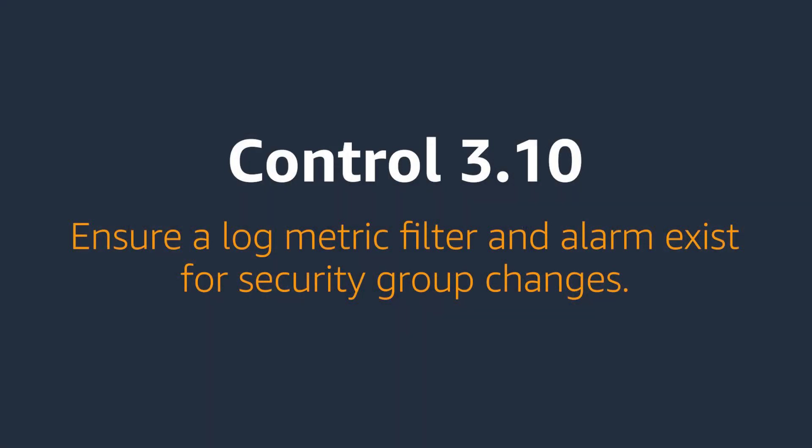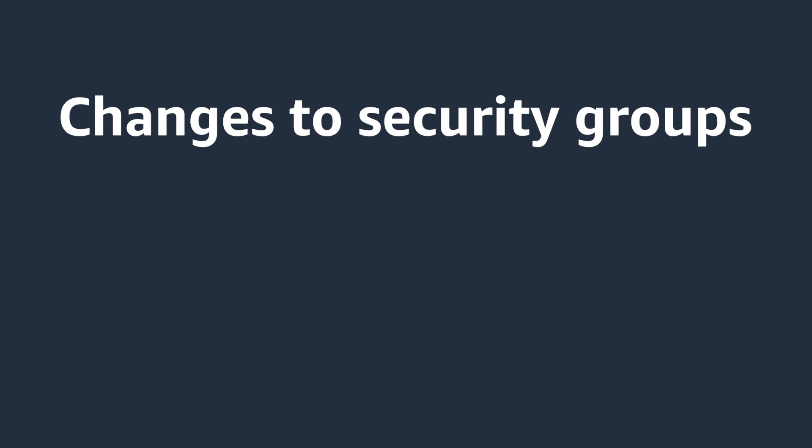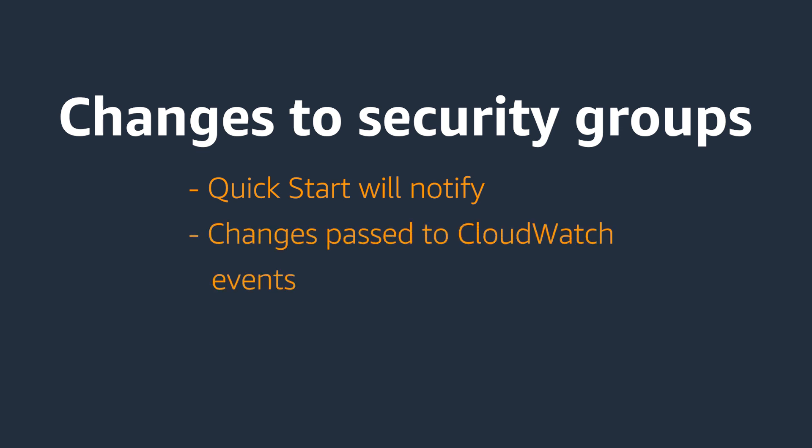The next control is 3.10, which says ensure a log metric filter and alarm exist for security group changes. That basically means alert me when a configuration change is made to a firewall inside my AWS account. A security group is a stateful firewall which can wrap around EC2 instances to give you granular control over network access. If any changes are made to them, regardless of what those changes are, the QuickStart will notify you because those changes will be passed to CloudWatch events. It will then send a notification summarizing the security group and the changes made to it.